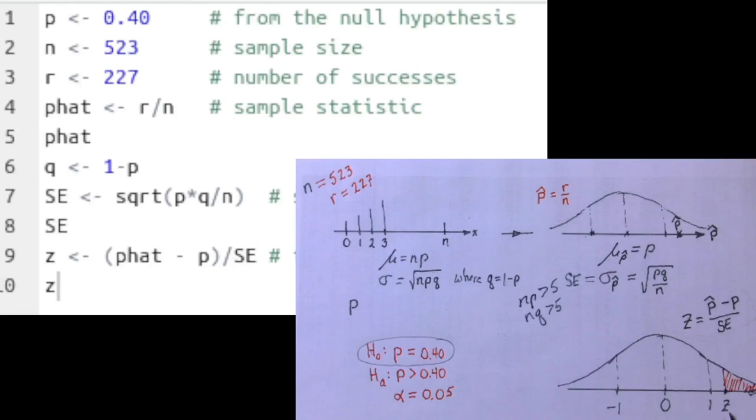So now R knows what this test statistic is, and we need to find this area in that upper tail. We have two tools in R that help us calculate probabilities in a standard normal curve. They are the P norm and the Q norm function. Now remember that the P norm tells you what an area is if you know a value on the Z axis...